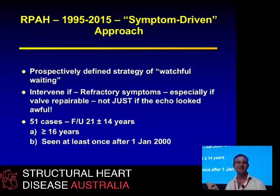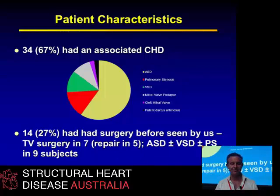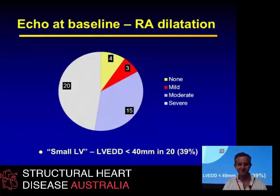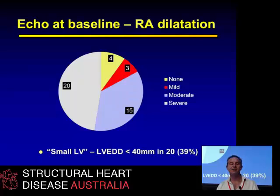So: 51 cases with 21 years follow-up. To be included, patients had to be at least 16 years old and be seen once since January 2000. Many had associated abnormalities — over half had an ASD and a lot had right ventricular outflow tract obstruction. A quarter had had surgery in childhood, usually tricuspid valve surgery. They were quite severe: about half had severe dilatation of the RA — Celermajer index over one — and about 40% had a small LV, defined as an LV end-diastolic diameter under 40 millimetres.